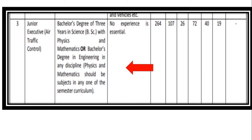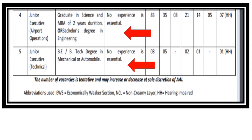In the notification, for Junior Executive Air Traffic Control it states a Bachelor's degree of 3 years in Science with Physics and Mathematics — it should be in one subject in any of the semesters — similar to BE. These details are given, so kindly go through them.